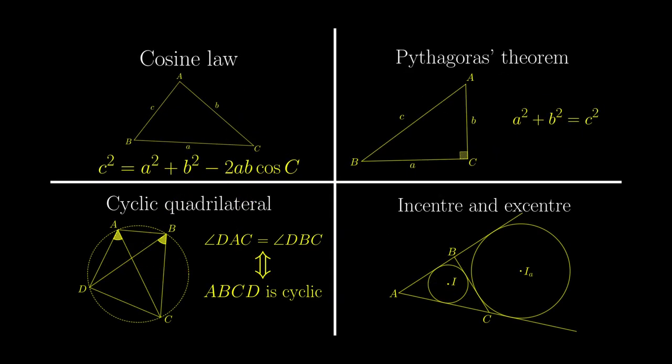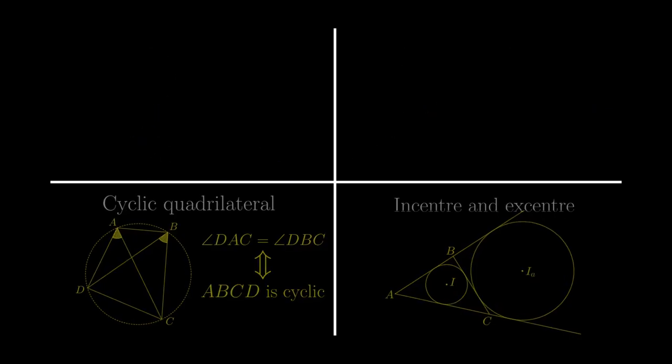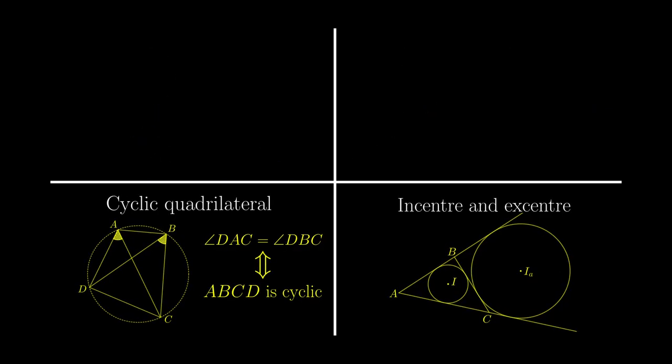These two proofs rely very heavily on algebra, so are there any other ways to prove Heron's formula without these heavy machinery? These two methods presented below would be more heavily reliant on geometry instead.